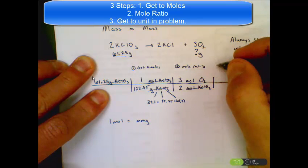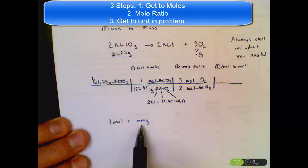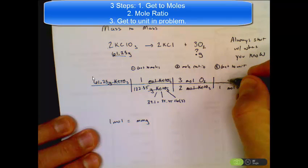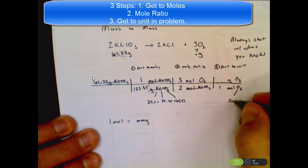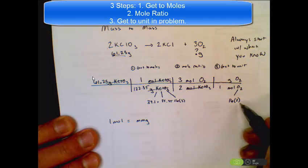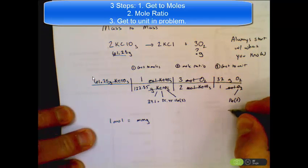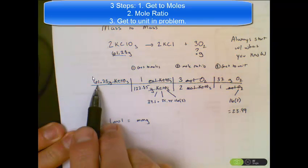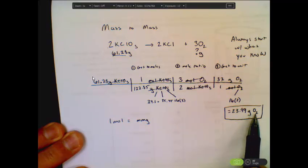I now have the correct chemical but the wrong unit. So my third step is to get to grams. I use the mole fact: one mole equals the molar mass in grams. Since I don't want moles in my final answer, I put them on the bottom. Oxygen has a molar mass of 32 (16 times two). Moles cross off. Multiplying numerators and dividing by denominators, I get 23.99 grams — rounded to 4 sig figs — of O2. Units and chemical IDs are required in the answer.